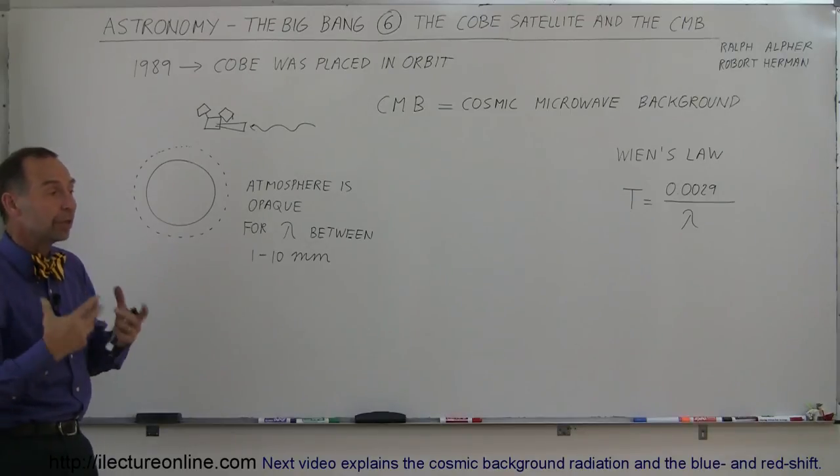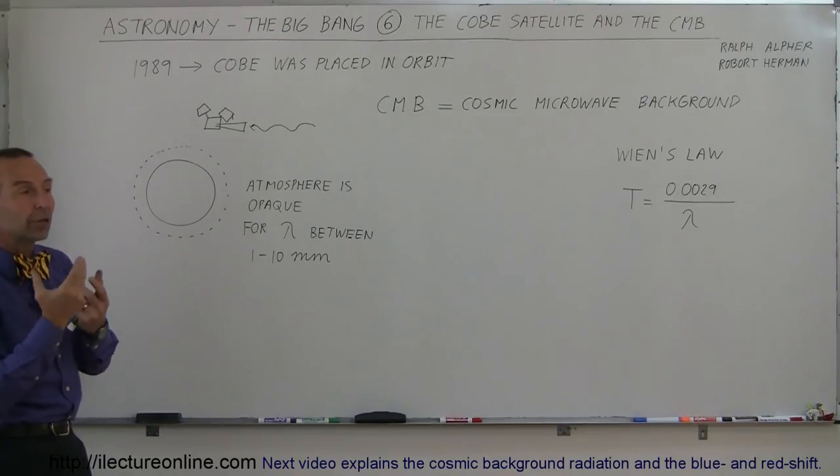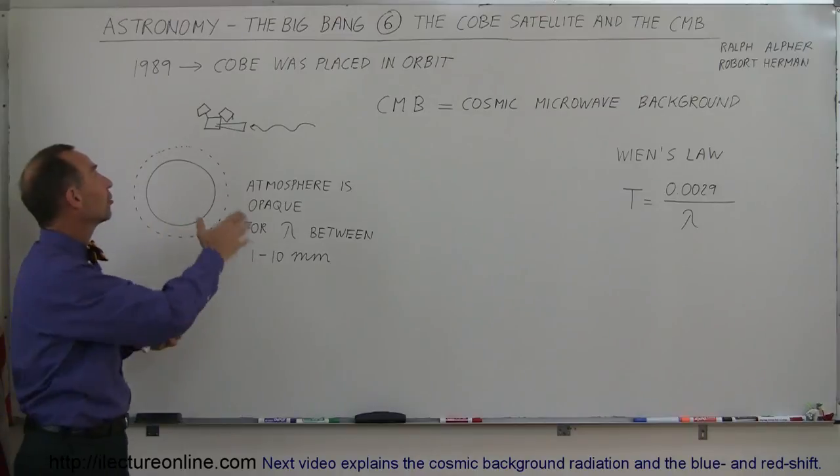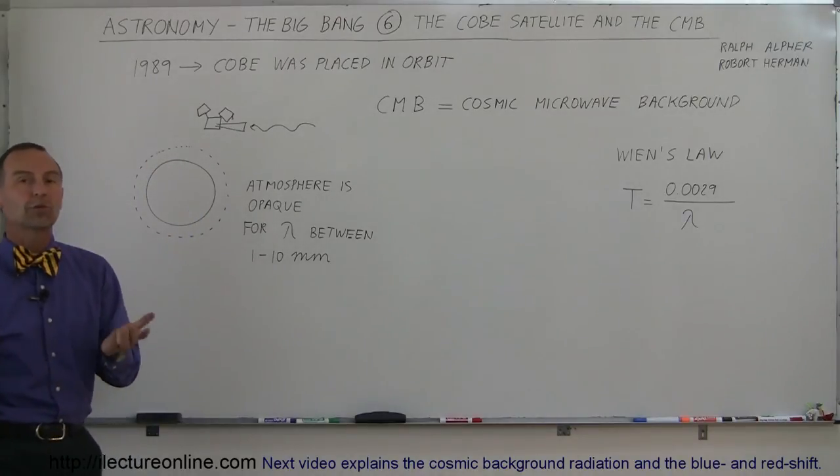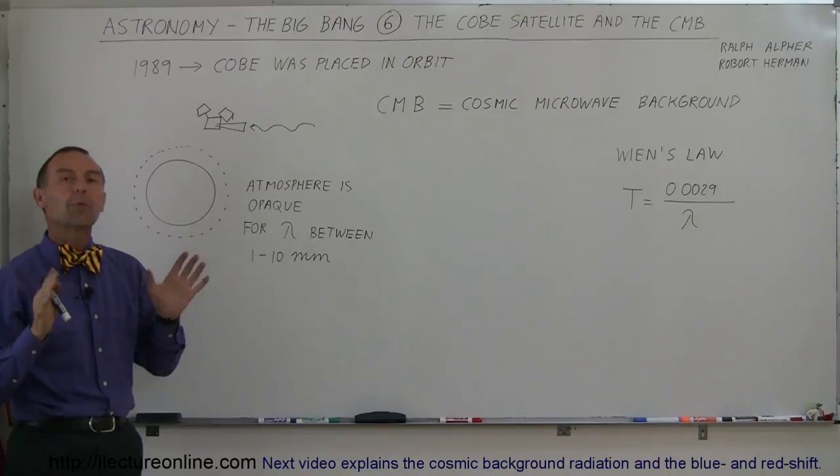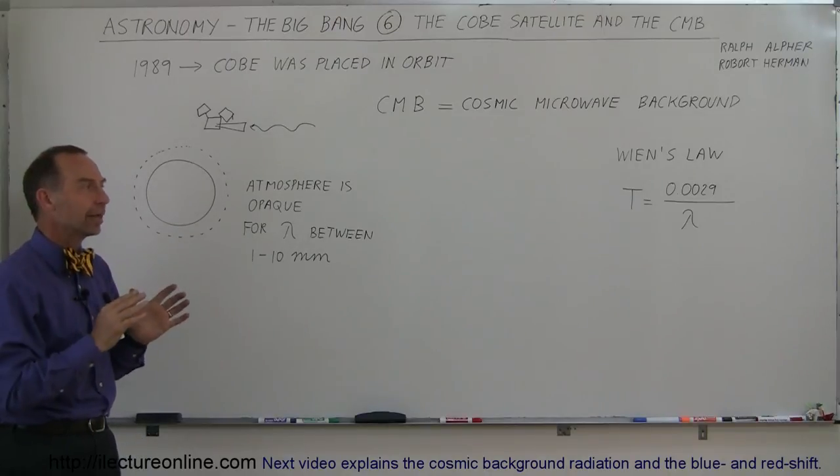So, to take better readings, we built a telescope with an instrument that could measure this radiation and put it in space. So, in 1989, COBE was launched into space. And we began to make readings and what we found was absolutely astounding.